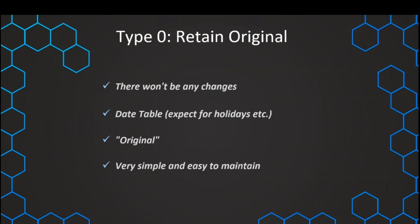If we happen to have such a situation, this is great because there's no additional work and no additional thoughts necessary. But just be aware that you are really sure that there are no changes, or at least those changes don't need to be reflected in our dimension table. Sometimes there need to be some changes, and that's why we want to move on to the first type, which is the override type.